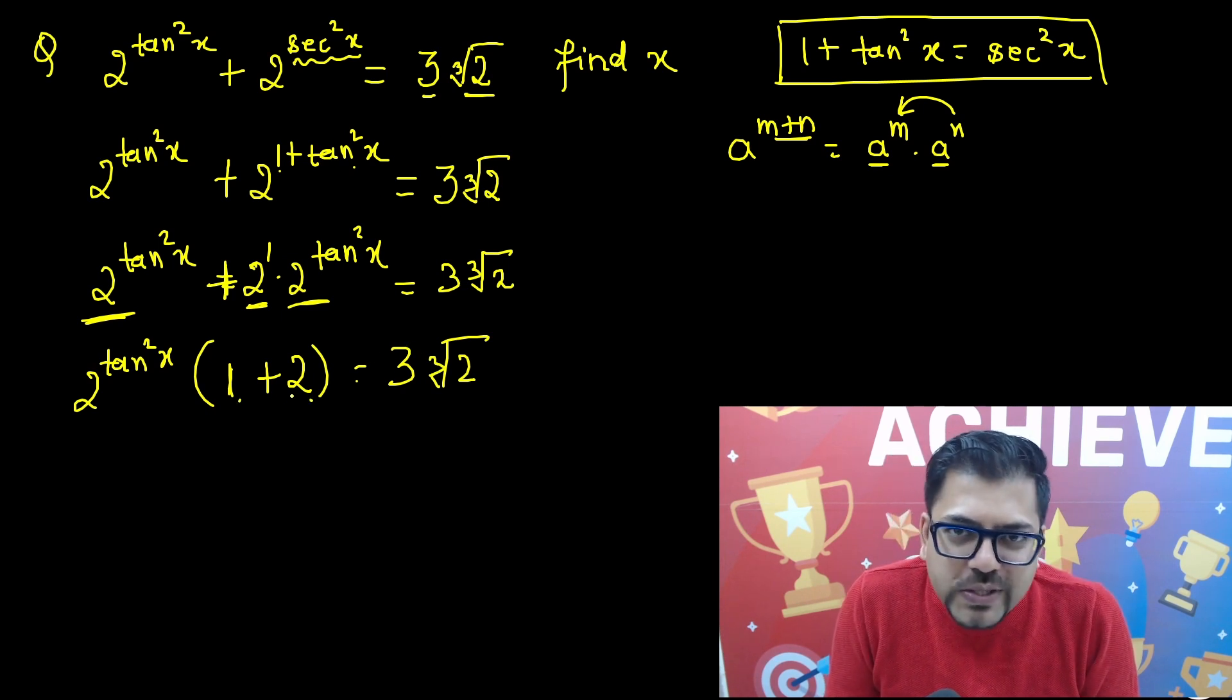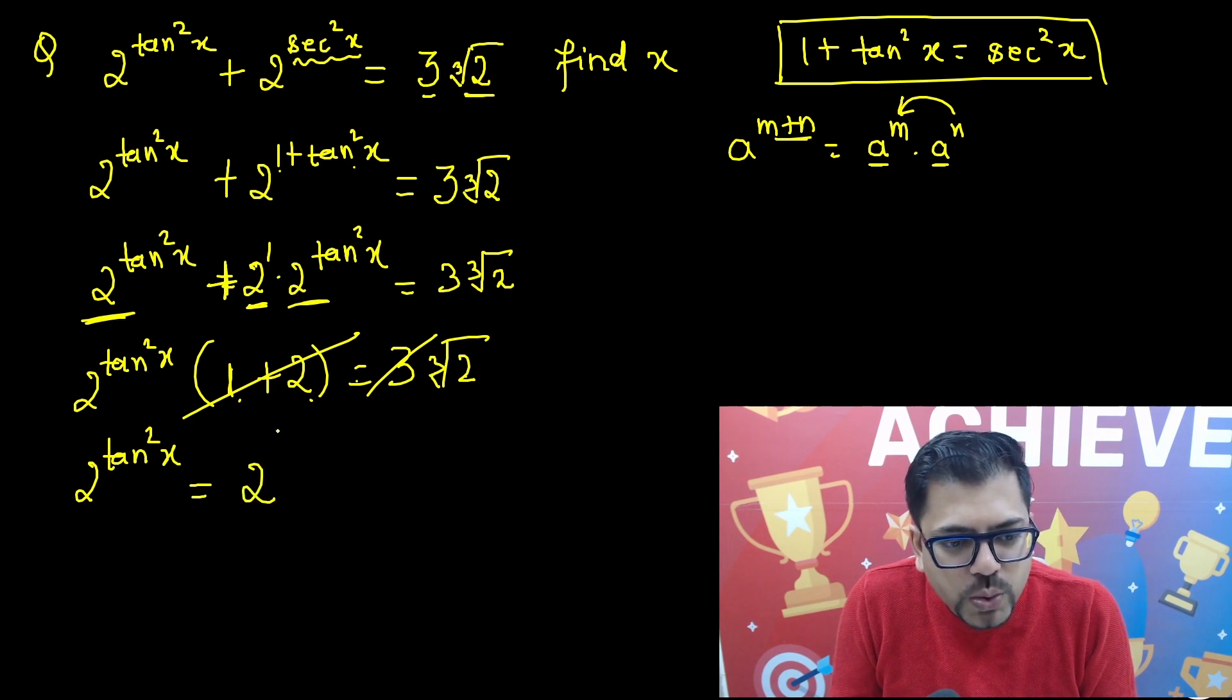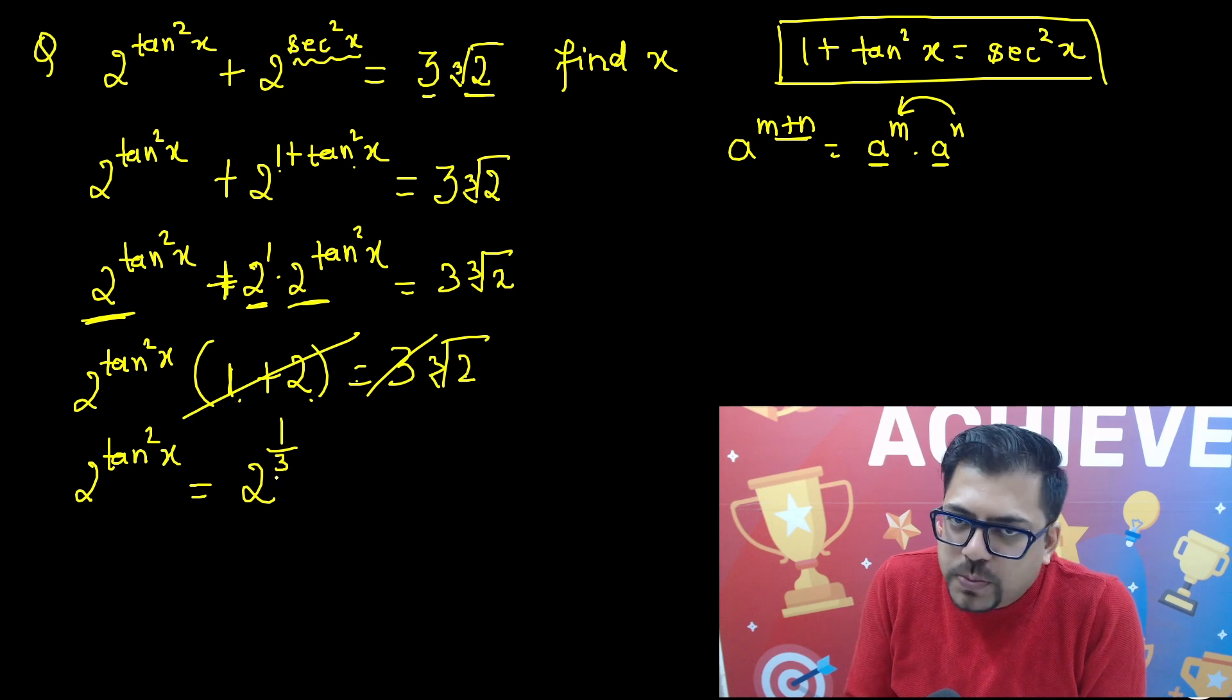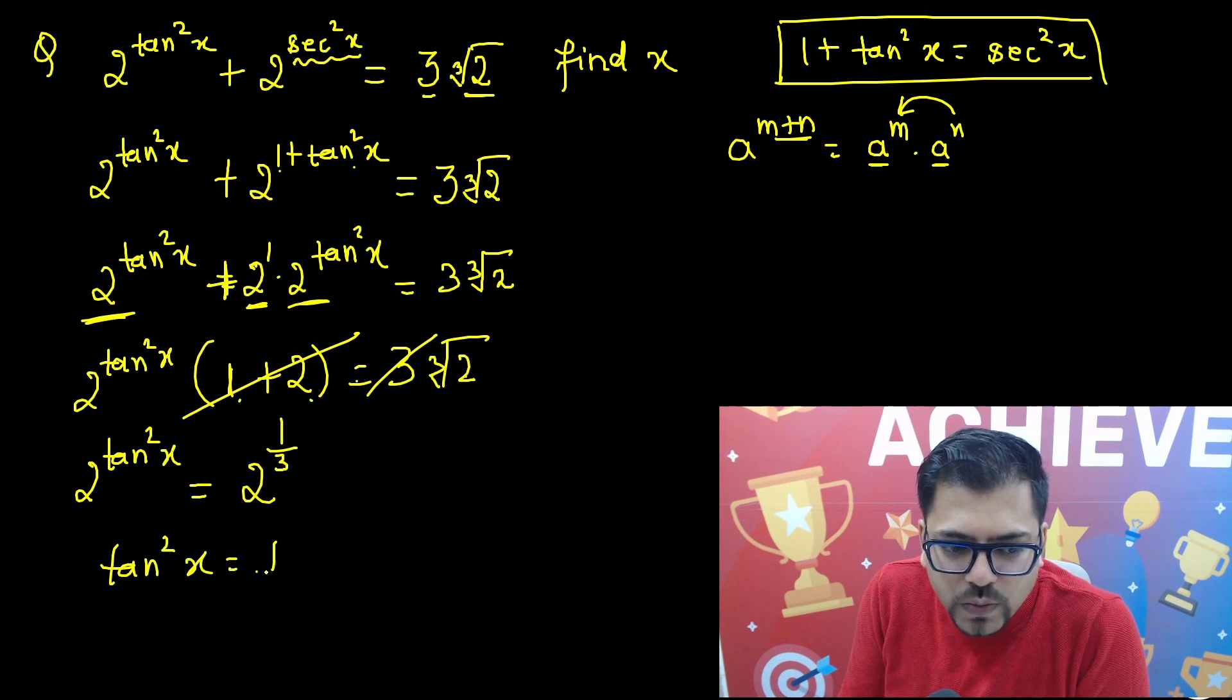So 1 plus 2 is nothing but 3. So 3 gets cancelled with this 3. Gone. So we have got 2 raised to power tan square x. And that is equals to cube root of 2 can be written as 2 raised to power 1 by 3. Cube root of 2 is this only. So 2 raised to power 1 by 3 is equals to 2 raised to power tan square x. That brings the solution to tan square x is equals to 1 upon 3.